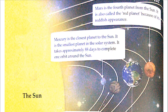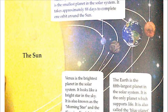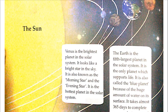First is Mercury. Mercury is the closest planet to the sun and the smallest planet in the solar system. It takes approximately 88 days to complete one orbit around the sun — Mercury 88 days mein apna ek pura round lagata hai suraj ka, because it is the closest to the sun.